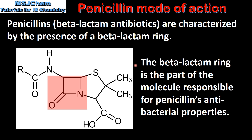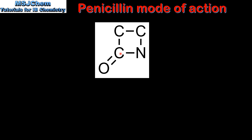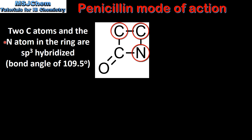The beta-lactam ring is the part of the molecule responsible for penicillin's antibacterial properties. The beta-lactam ring is composed of three carbon atoms and one nitrogen atom. Two carbon atoms and the nitrogen atom in the ring are sp3 hybridized, giving a usual bond angle of 109.5 degrees.